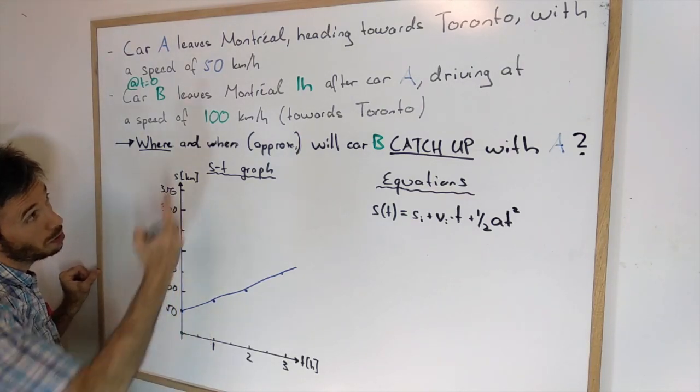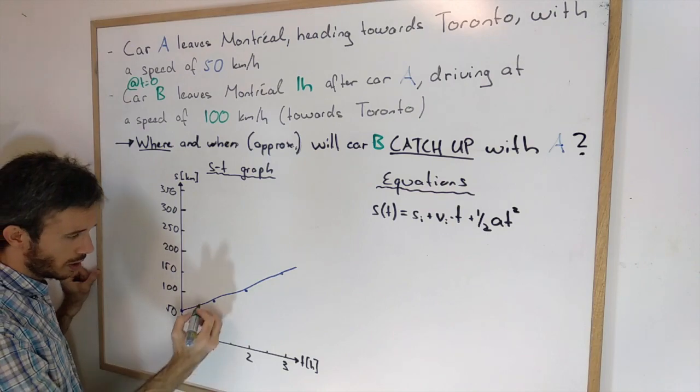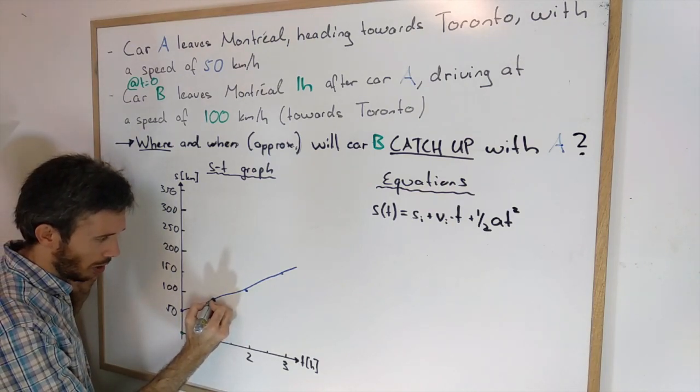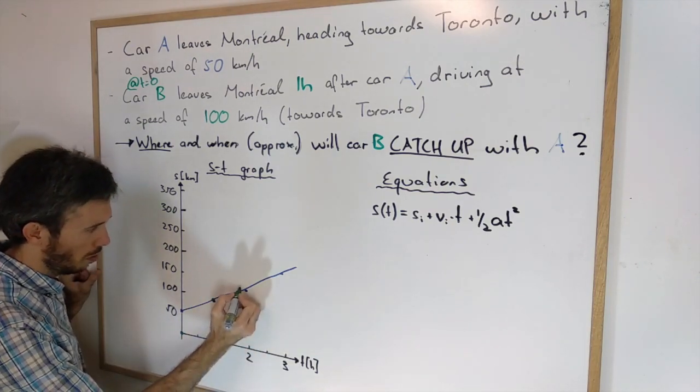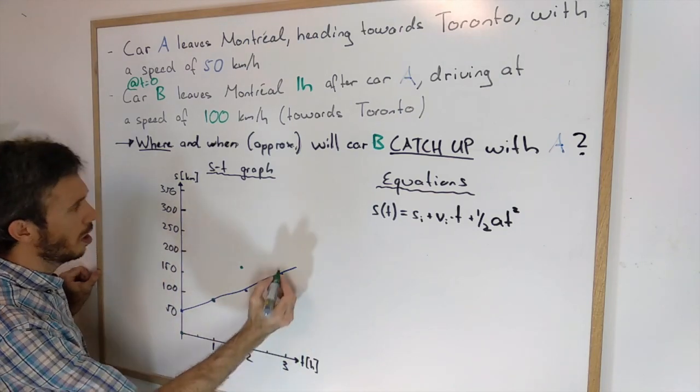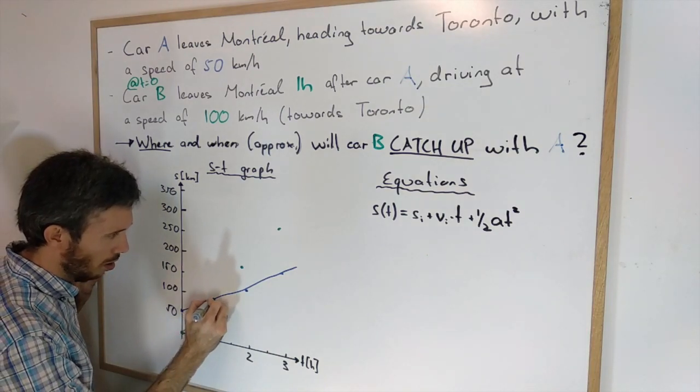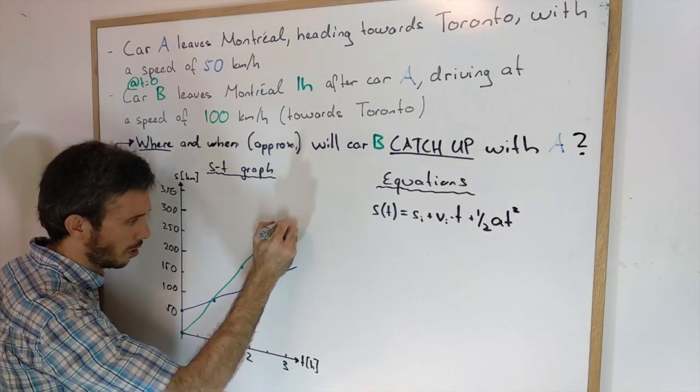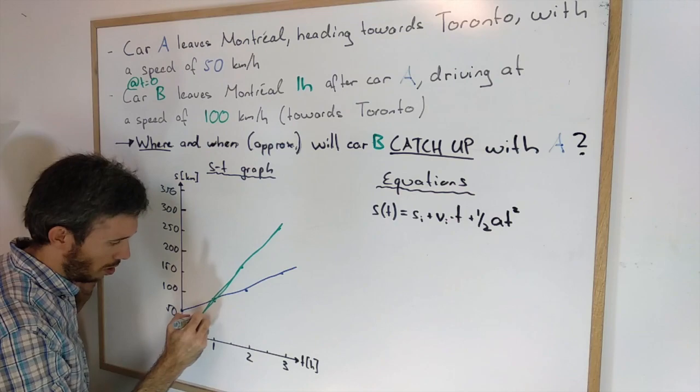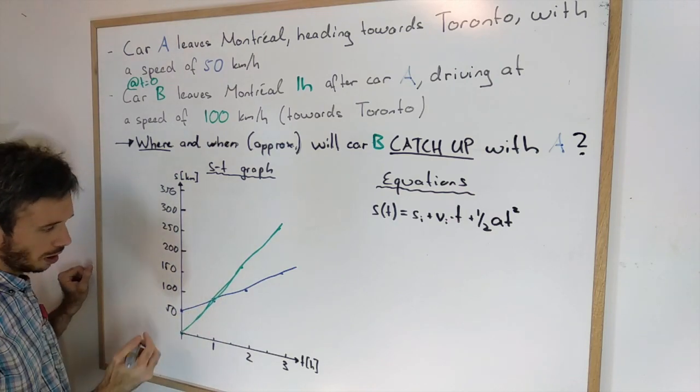B was driving for one hour at 100 km an hour, so in this case it will be at 100 km. At two hours it will be at 200 km, at three hours at 300 km and so on. So here is what the movement will look like.